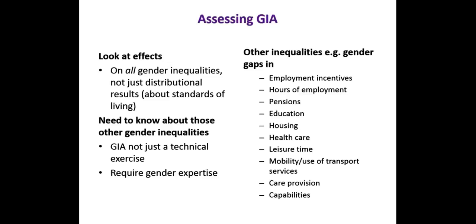A holistic approach would require all these dimensions to be analysed. Sometimes you can reduce it to fewer dimensions depending on the outcome of the analysis. I will show a distributional analysis that concentrates on people's income, already augmented by including the value of public services provided for free by the government.